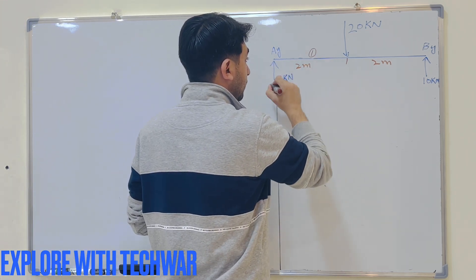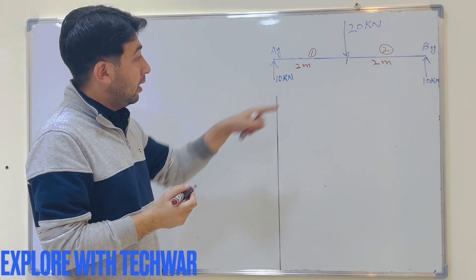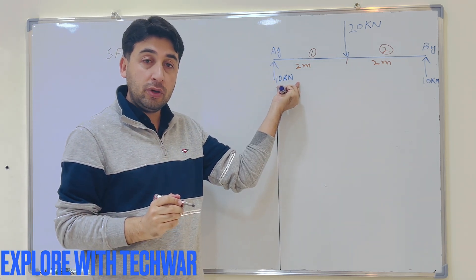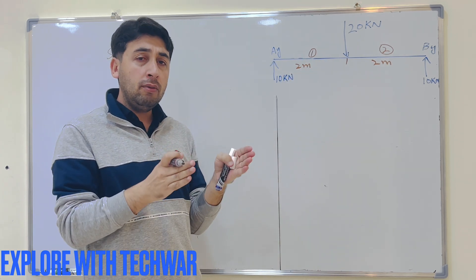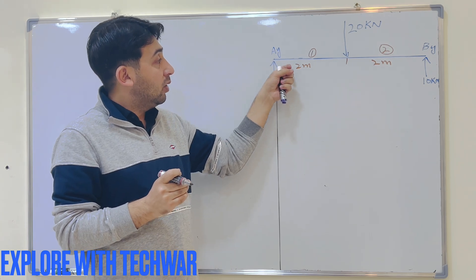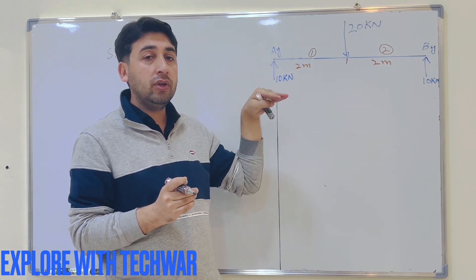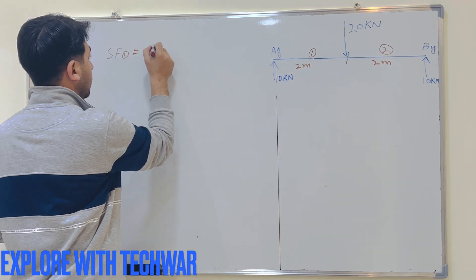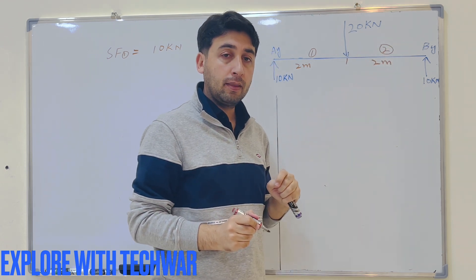Now we will find the shear forces. Shear force at any section can be found by summing all forces on either side of that section, as discussed in the previous video. We will work from the left side. The only force on the left side of point 1 is 10 kN acting upward. Upward forces are taken as positive, downward as negative. So the shear force at point 1 is +10 kN.